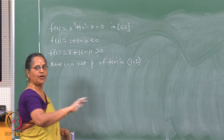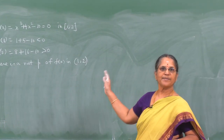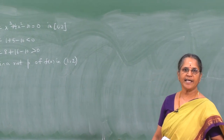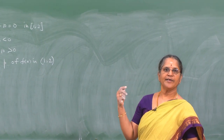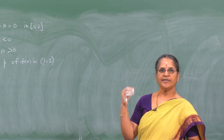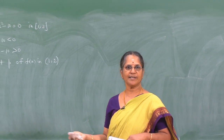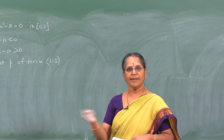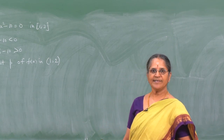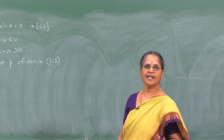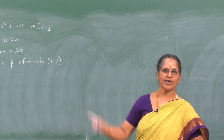We know some methods by which we can obtain this root numerically: namely bisection method, Newton-Raphson method, secant method, and Regula-Falsi method. Of these, the bisection method and the secant method belong to the class of enclosure methods.